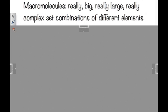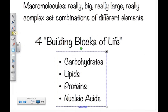Macromolecules are really big, really large, complex combinations of different elements and molecules. They have a set ratio of different elements present in them. There are four types of macromolecules: carbohydrates, proteins, lipids, and nucleic acids. They're referred to as the building blocks of life — not living material, but the chemical structures that sustain proper structure and function in your body at the cellular level.